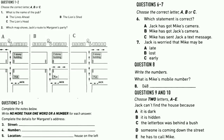Now we shall begin. You should answer the questions as you listen because you will not hear the recording a second time. First, you have another chance to look at questions 1 to 5. Now listen carefully and answer questions 1 to 5. Jack has got lost on his way to Margaret's party. He is phoning her for directions.